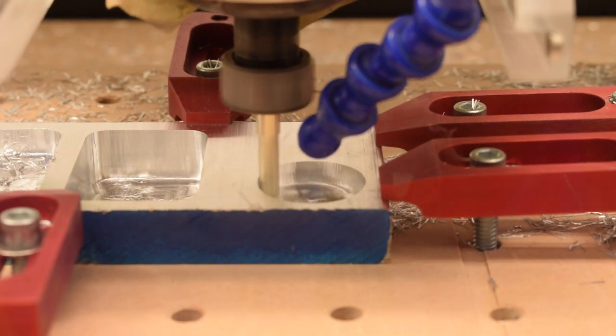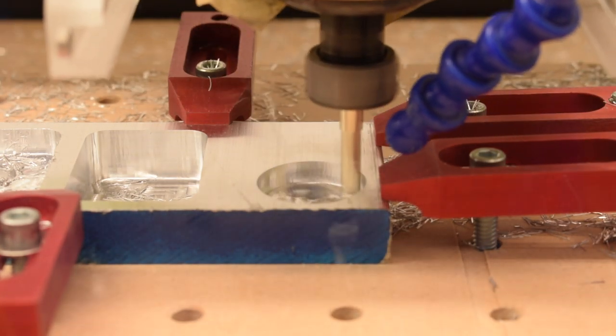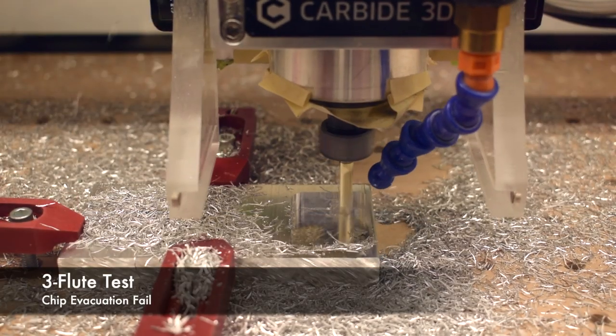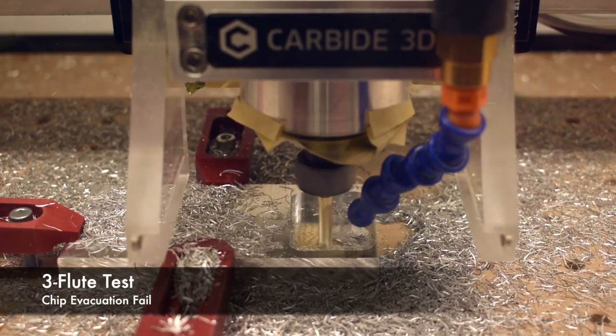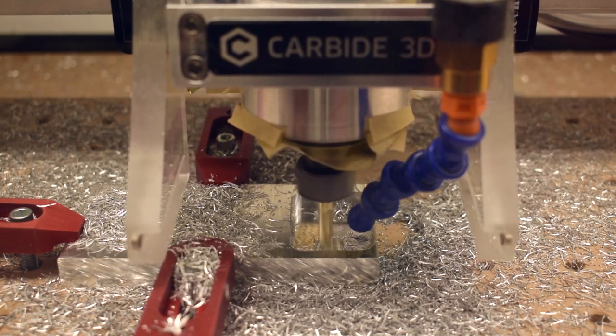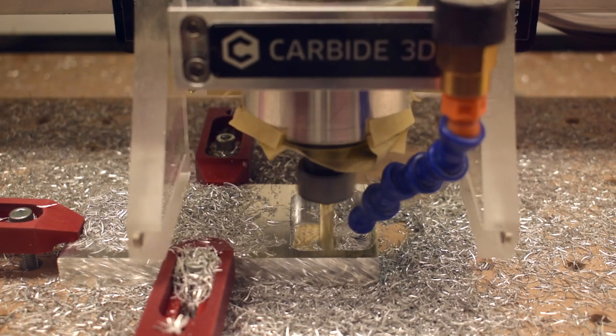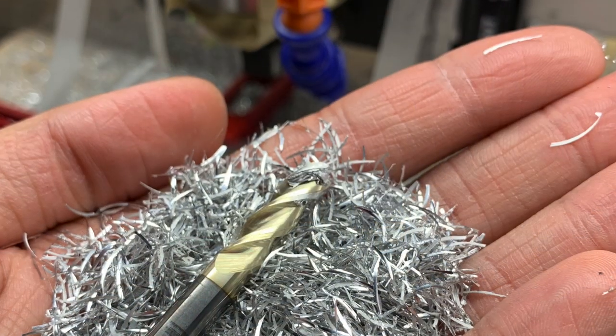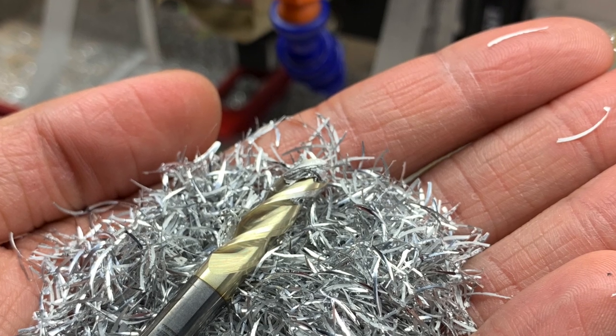One thing to note with cuts like this is how long these chips are. If you had a higher helix end mill with smaller flutes, you could get into a situation where these chips don't clear fast enough, and then they would eventually compact in the flutes, clog, and lead to cut failure. That's what happened here when I tried a 3 flute end mill with a similar adaptive recipe. It worked for a while, but eventually the cutter clogged and I had to abort the program.